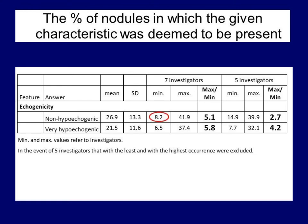This table presents the results in judging echogenicity. For example, the 8.2 percent value refers to the investigator who rarely considered a nodule as non-hypoechoic. Another example is the 32.1 percent value, which refers to the colleague who was the second most likely to consider a nodule as deeply hypoechoic. It would be difficult to say that investigators presenting the two extremes speak the same language when there is a more than five-fold difference between them.